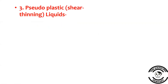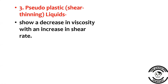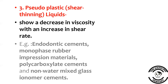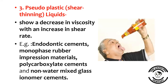Next we have pseudoplastic or shear thinning liquids. These liquids show a decrease in viscosity with an increase in shear rate — when shear stress is applied, viscosity decreases. Examples are endodontic cements, monophase rubber impression materials, polycarboxylate cements, and non-water mixed glass ionomer cements.